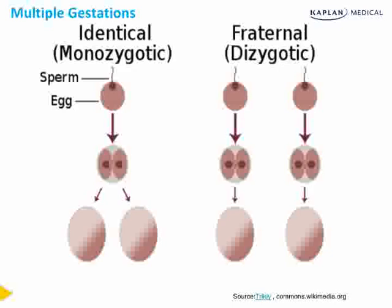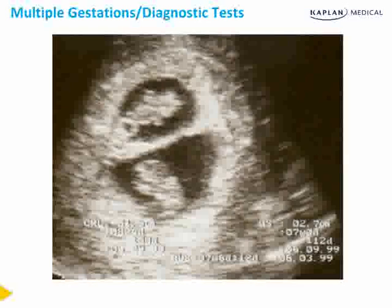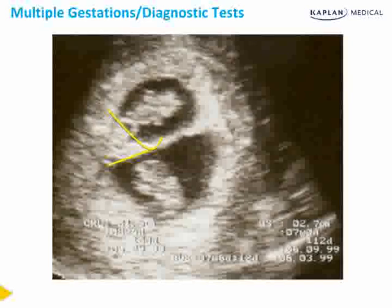To drive home this important point: identical or monozygotic twins result from one sperm and one egg which splits, whereas fraternal or dizygotic twins result from two sperm and two eggs. Multiple gestations are ultimately diagnosed by ultrasound. This ultrasound scan of a twin pregnancy at eight weeks' gestation shows an important concept: the triangular peak of chorion extending from the placenta to the intertwin membrane is the lambda sign, which is seen in a dichorionic and diamniotic twin pregnancy.